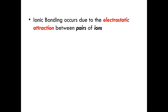Ionic bonding occurs due to the electrostatic attraction between pairs of ions. Some of you may be wondering what electrostatic attraction is. So just to review, an electrostatic attraction occurs when two oppositely charged objects, say a proton and an electron, exert a charged force onto one another over the distance of space between them. Since they're oppositely charged, their forces attract. So basically, electrostatic attraction is an attractive force exerted by two objects of opposite charges onto one another over a certain distance between them.